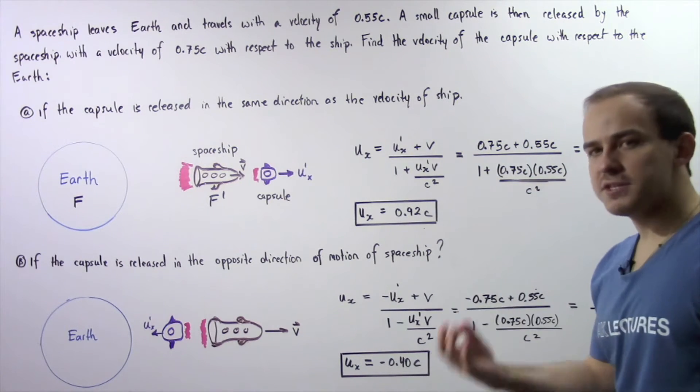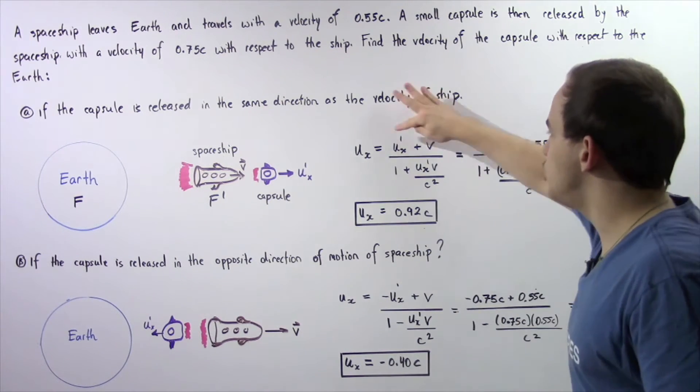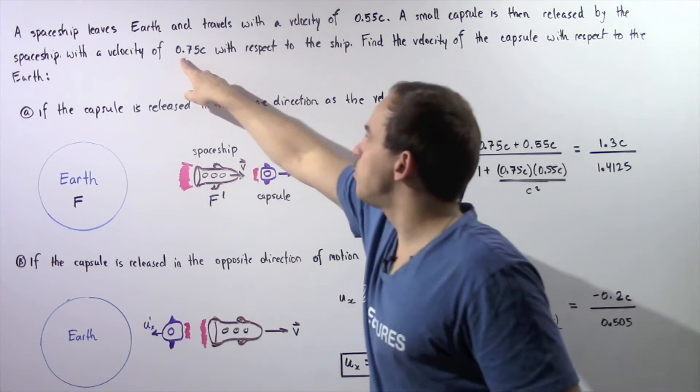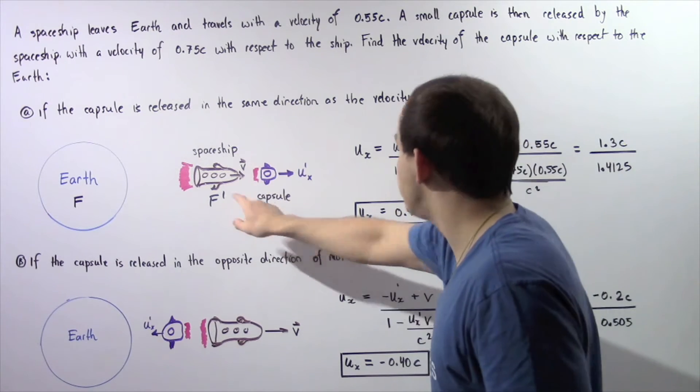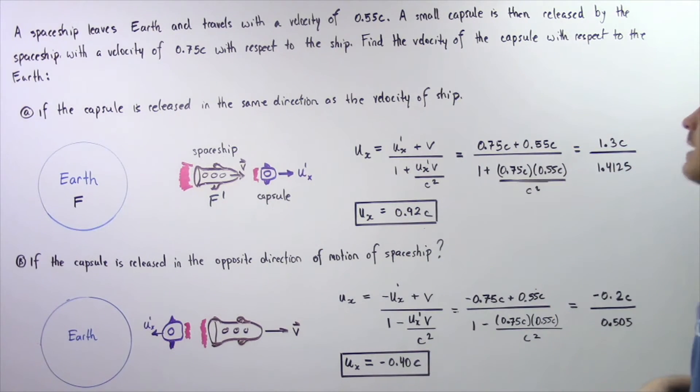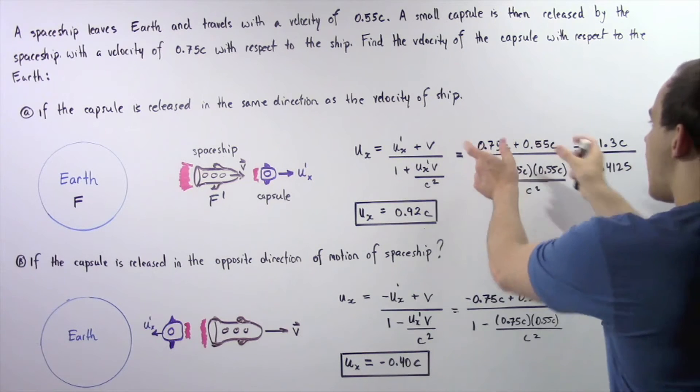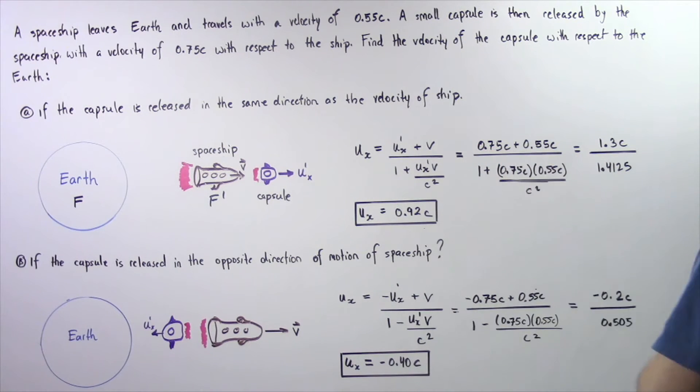C is simply the speed of light in a vacuum. U'x is 0.75C and V, the velocity of the spaceship frame F', is 0.55C. The top is 0.75C plus 0.55C and that gives us 1.3C.